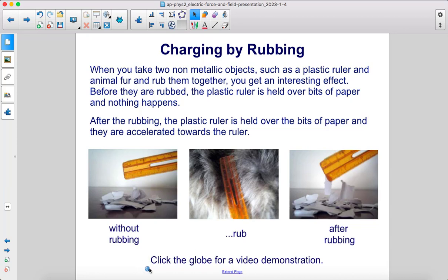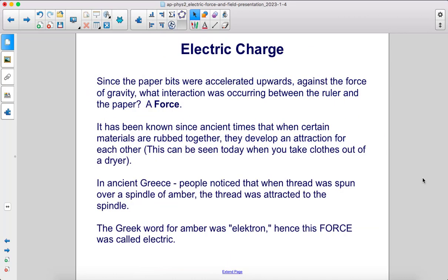Click here for a video demonstration. Since the paper bits were accelerated upwards against the force of gravity, what interaction was occurring between the ruler and the paper? A force.